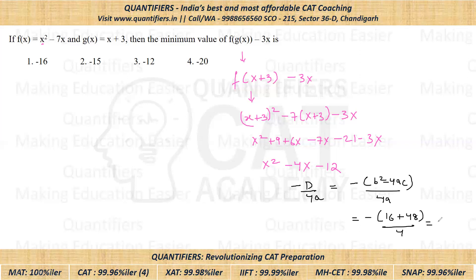So this comes out to be minus 64 by 4, which is minus 16. Minus 16 is the correct answer.